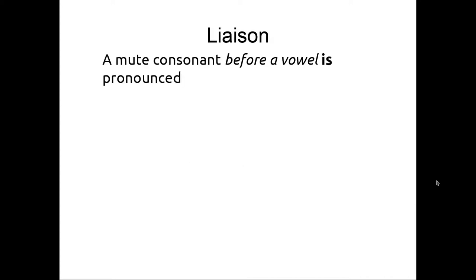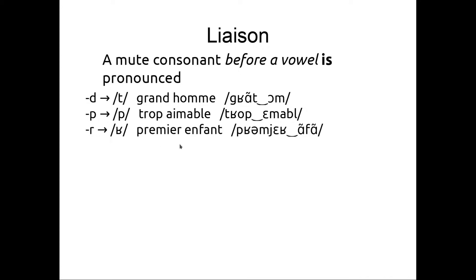But, when there is a vowel afterward, a mute consonant becomes pronounced. The D is pronounced T when there is a vowel afterward. This phenomenon is called liaison. So, we don't say, we say grand, we say homme, but we say grand homme. We say, the P is pronounced P. We say trop, we say aimable, but we say trop aimable. The R is pronounced R. We say premier, we say enfant, but we say premier enfant. S becomes Z. We say les, we say euro, but we say les euro. And T is pronounced T. We say pot, we say au, we say feu, but we say pot-au-feu.